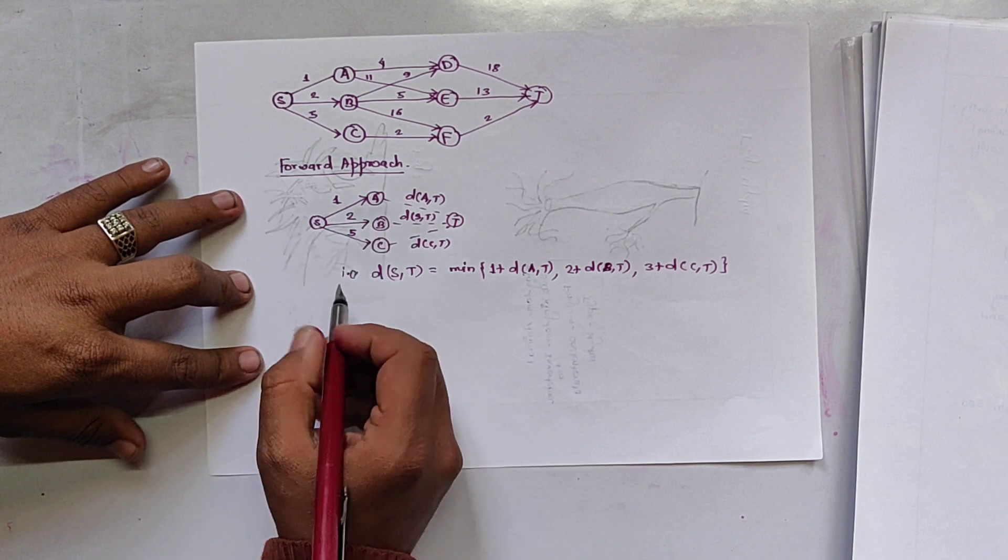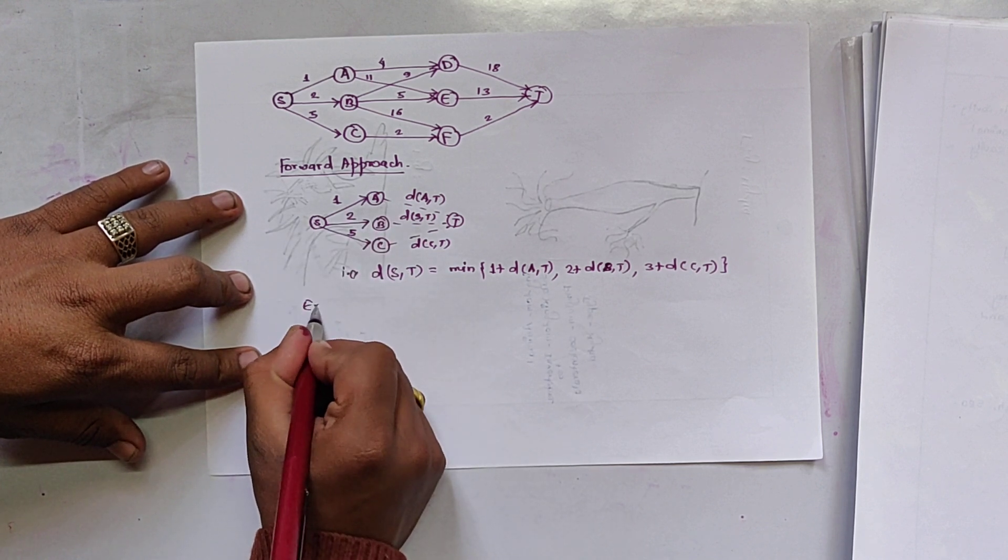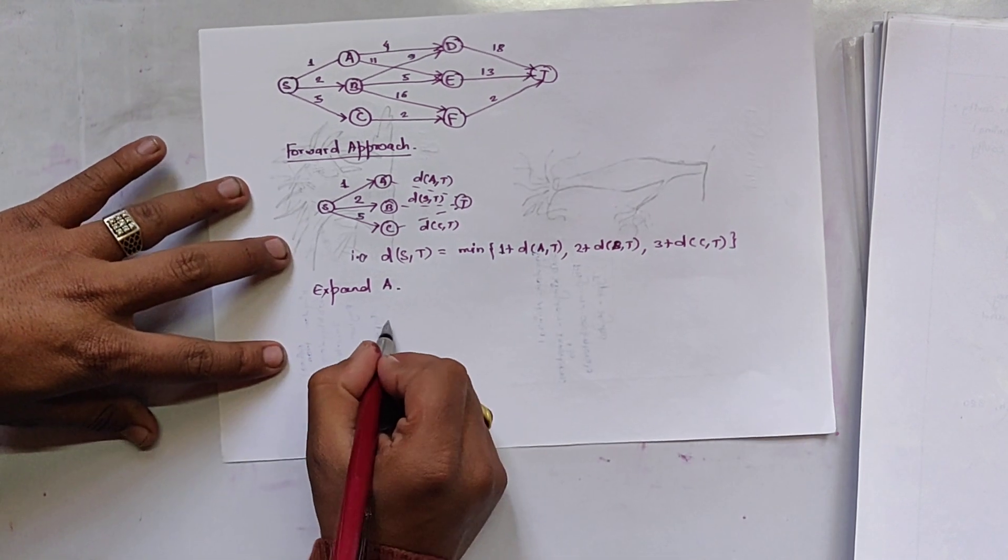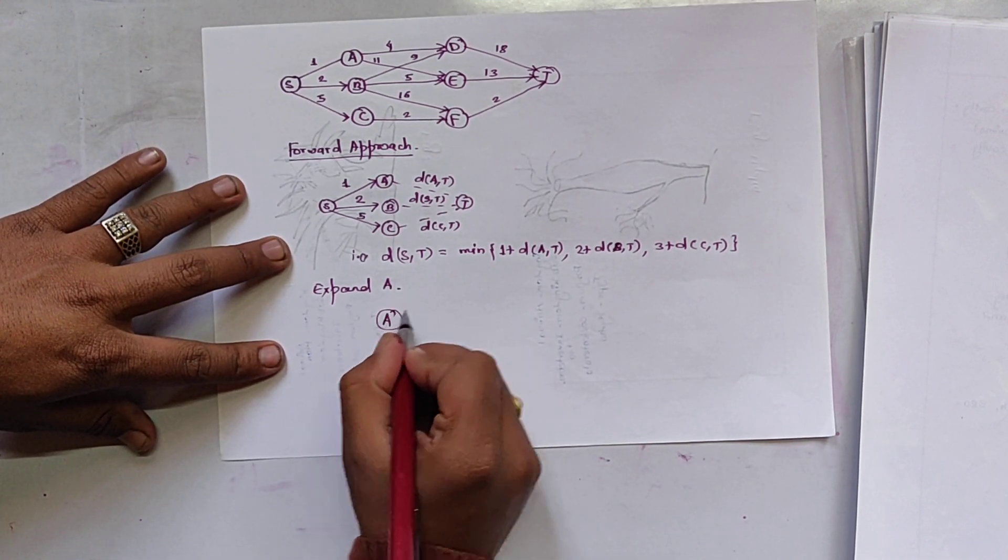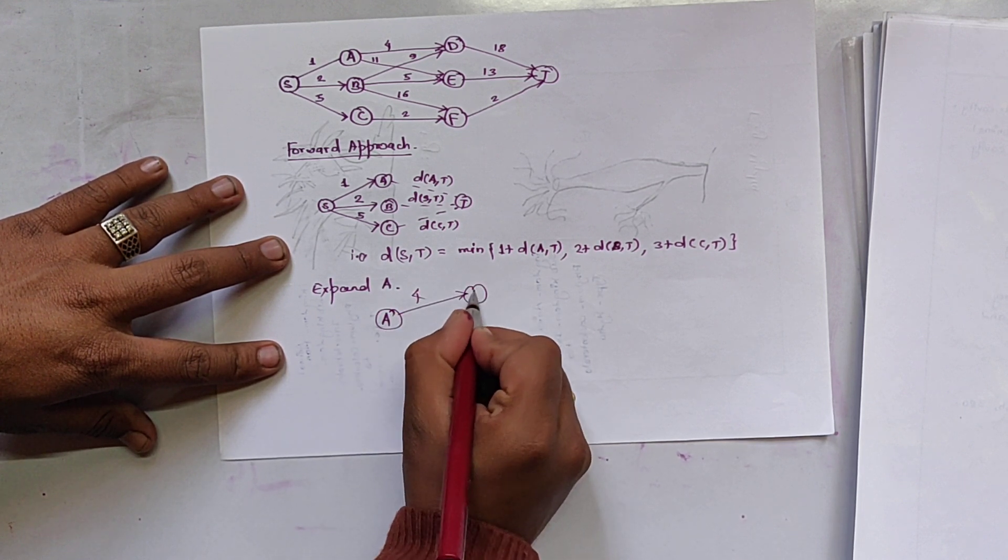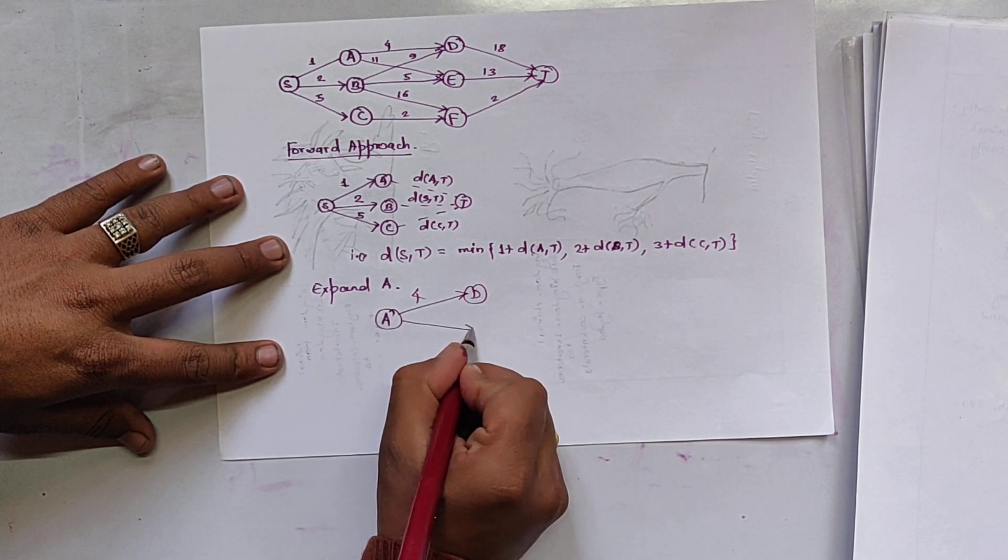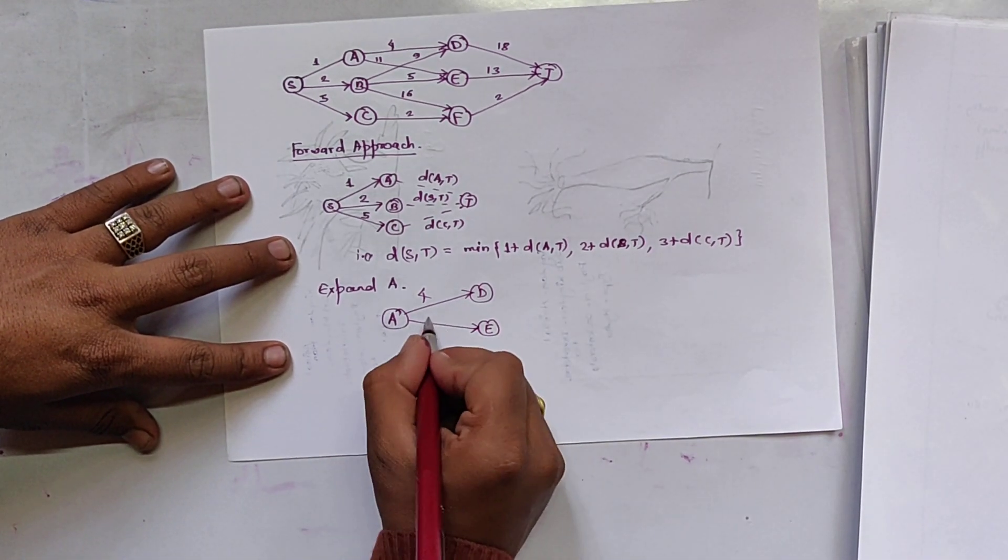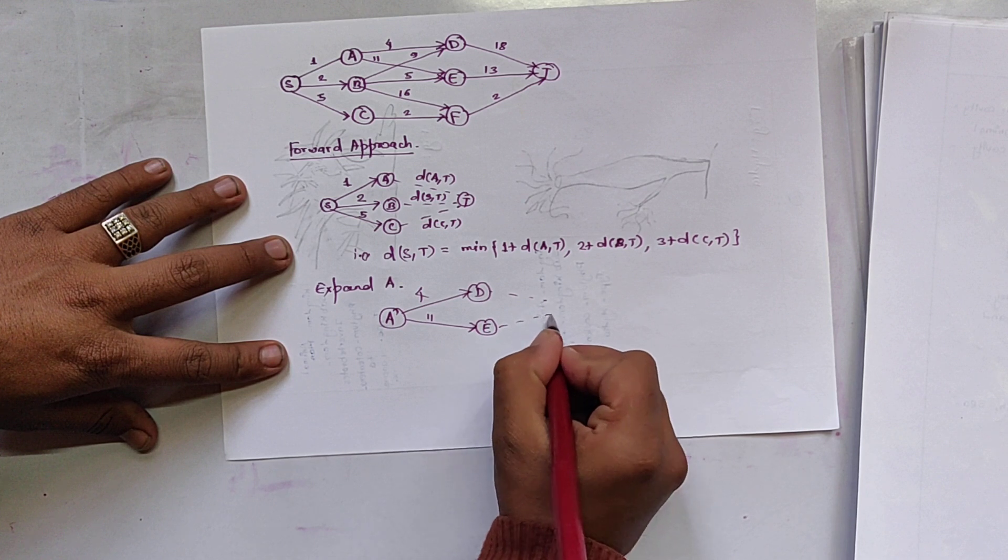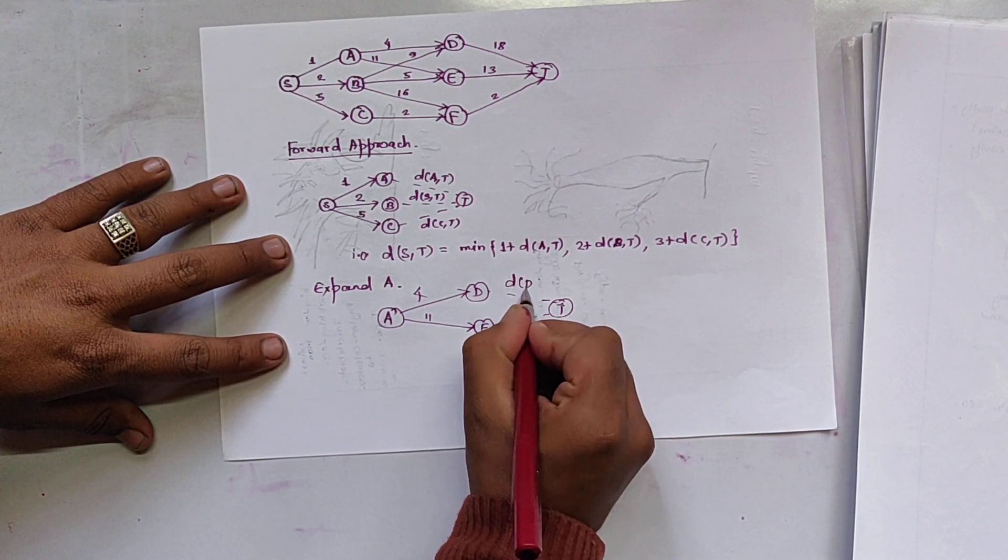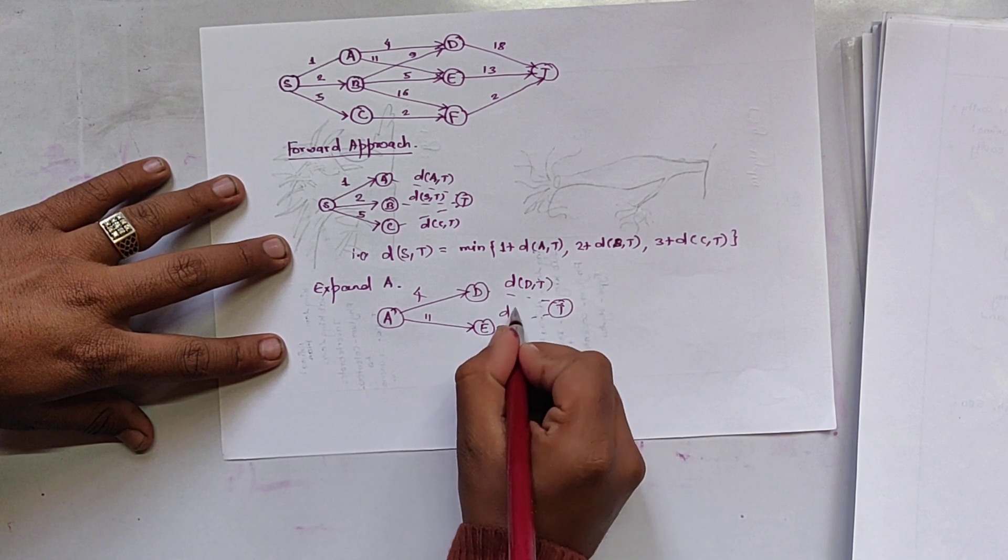So expand A. When we expand A, it gives like this. A, 4 to D and E. This has 11 and dot dot dot to T. And this is known as DDT. This is DET.